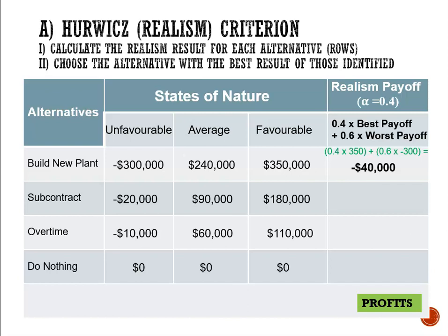For subcontract, we'll have 0.4 multiplied by 180,000, the highest profit, plus 0.6 multiplied by negative 20,000, the lowest profit. That gives us a Hurwitz payoff of $60,000. For overtime, we're looking at 0.4 multiplied by 110,000 plus 0.6 multiplied by negative 10,000, and that gives us $38,000.